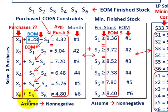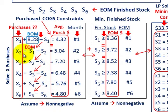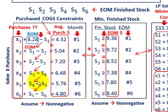All these variables have to be assumed non-negative — the purchases you have for the month, your stock at the beginning and end of the month. So that non-negativity constraint has to go in as well.